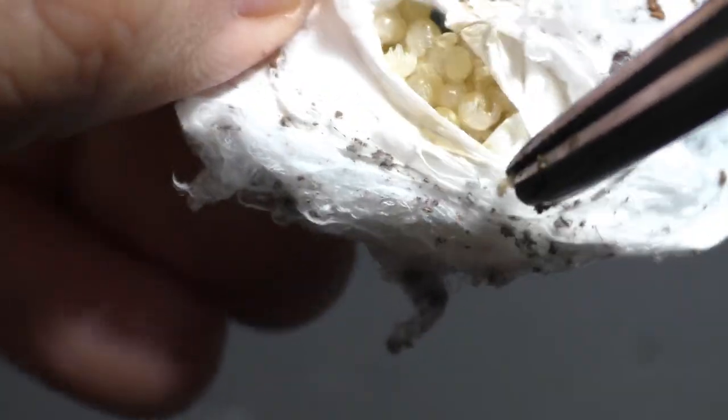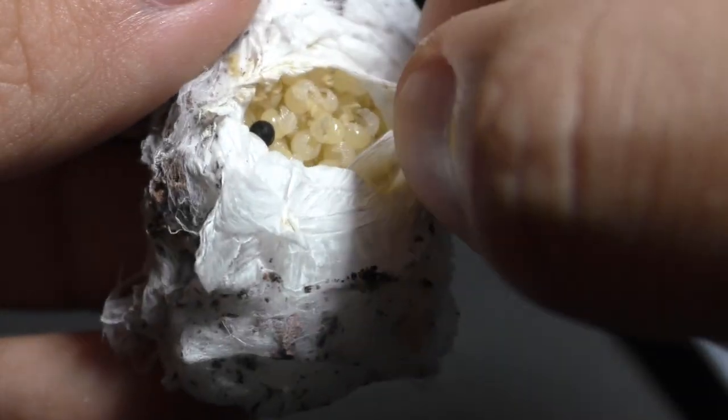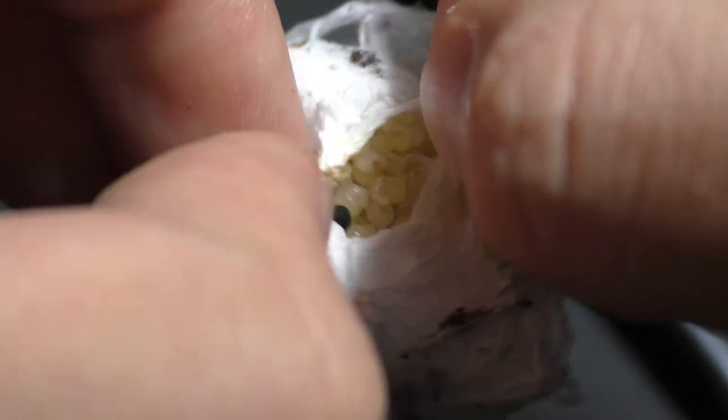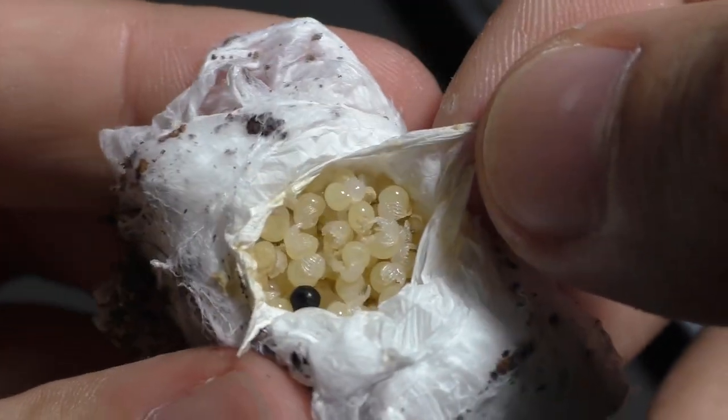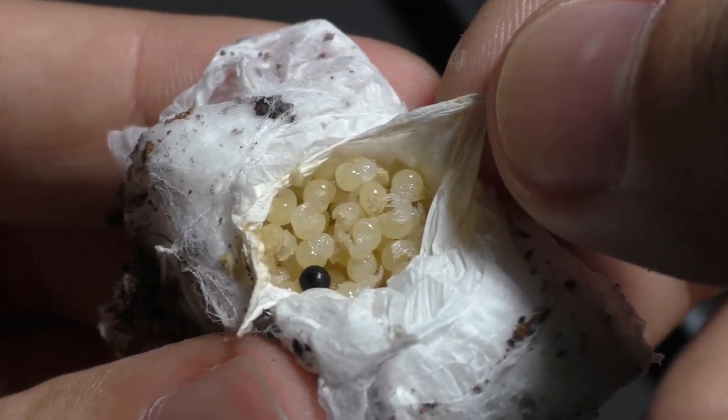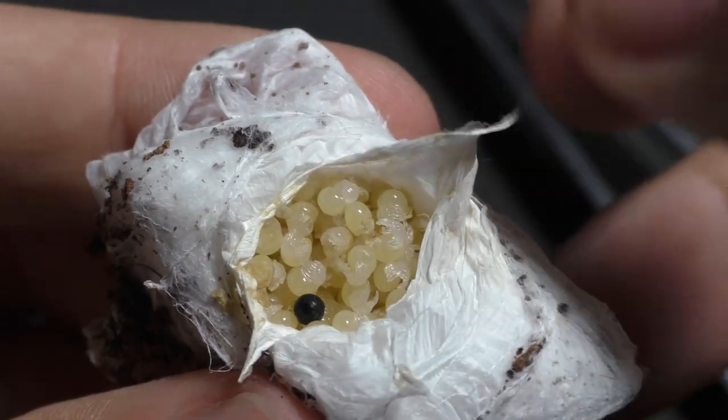Anyhow, now we finally get to the egg sac and as you can see, this egg sac actually looks really good. There's only one bad egg and probably a couple infertile eggs, but overall it looks like a healthy sac, so I'm really proud about that.